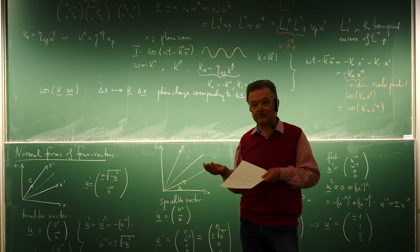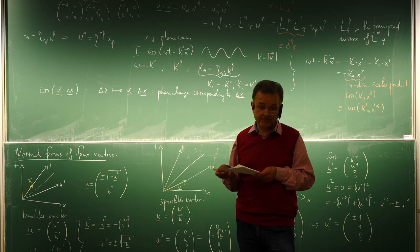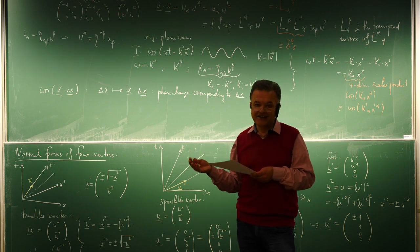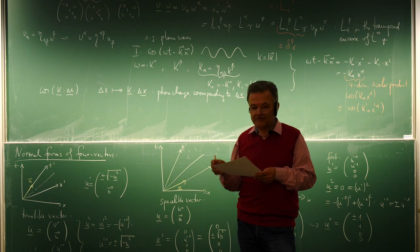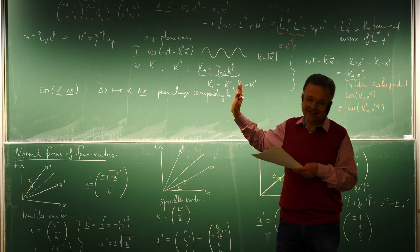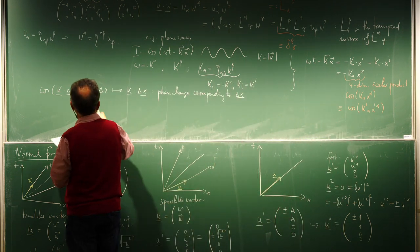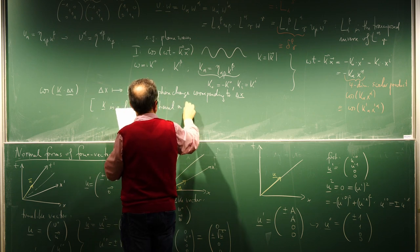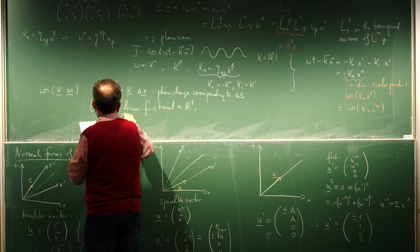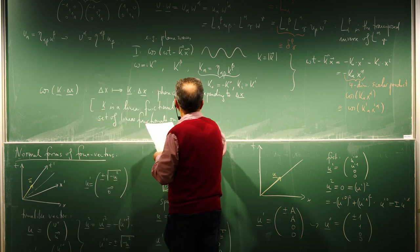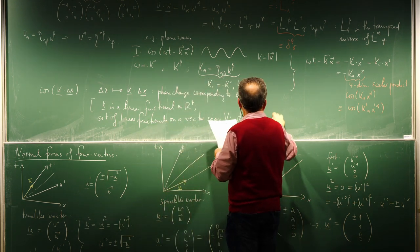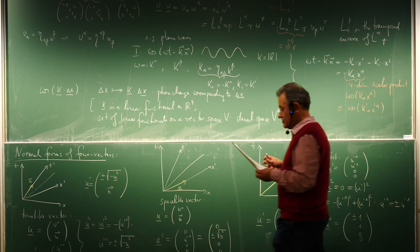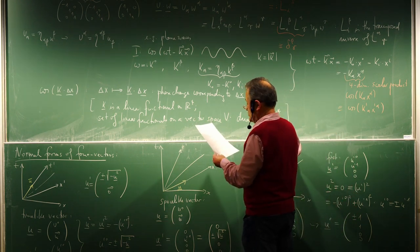Mathematically, k can be interpreted as a linear functional on R4, mapping a spacetime distance delta x to the phase k times delta x. The set of linear functionals on a vector space V is called the dual space, and its elements are called co-vectors or one-forms. We will encounter these again in the first chapter of the summer term when formulating everything with forms.